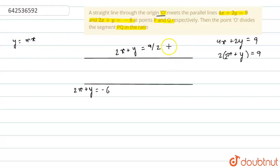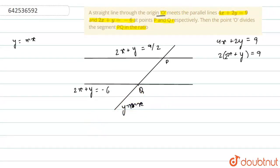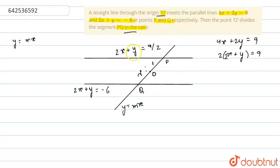Let this line cut line 1 and line 2 at points P and Q respectively. This line is y equals to mx. Now, point O is here somewhere on PQ. We have to find out in which ratio O divides the line PQ. Let the ratio be lambda is to 1. We will get point P by finding the intersection of the lines 2x plus y equals to 9 by 2 and y equals to mx. And Q will be found through the line 2x plus y equals to minus 6 and y equals to mx.